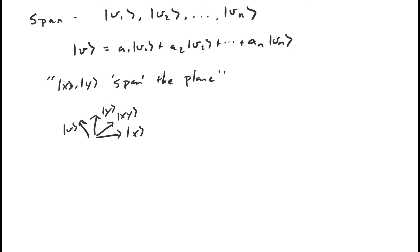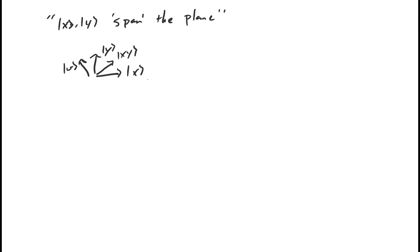I want to point out that you can have vectors that span the plane that aren't linearly independent. So we would be equally correct in saying that the vectors x, y, and xy span the plane, because any vector in the plane can be expressed as a linear combination of these three vectors — even though having all three is redundant, because any two of these also span the plane.